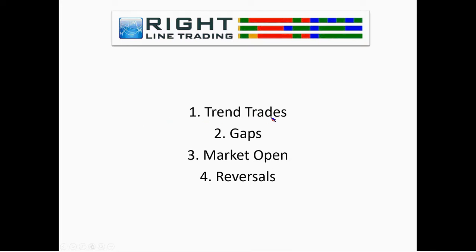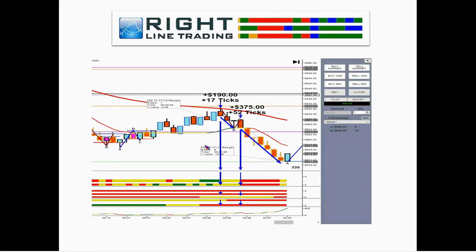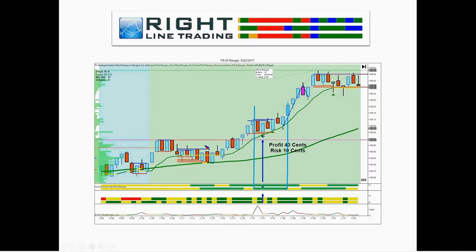Cash metrics allow you to trend trade with great precision. You can trade gaps, market open, and reversals with a greater degree of precision. Here are the cash markets and their analysis — let's look at Facebook. We're moving to stocks, and I'm going to show you some examples for futures as well.